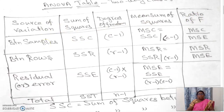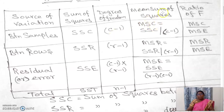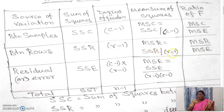The first row of the ANOVA table is between samples, between rows, and error. Between samples: the sum of squares is denoted as SSC, that is sum of squares between columns, and the corresponding degrees of freedom is C minus 1. Mean sum of squares between columns equals SSC divided by C minus 1. Similarly, between rows: the notation is SSR, that is sum of squares between rows, degrees of freedom is R minus 1, and MSR equals SSR divided by R minus 1.